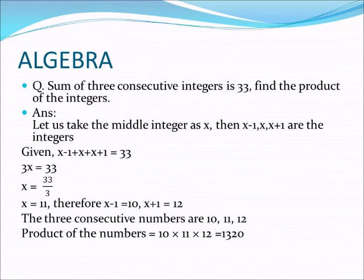The consecutive integers are 10, 11, and 12. Now the question asks us to find the product of the integers. The product is 10 times 11 times 12. First, 11 times 12 equals 132, and 132 times 10 equals 1320. So the answer is 1320.